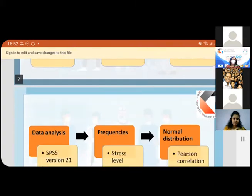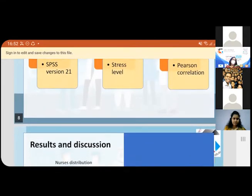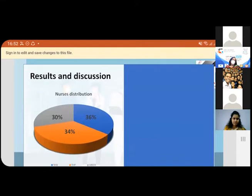I used Statistical Package for Social Sciences version 21 for data analysis. I found the frequencies for stress level. There was a normal distribution according to the Shapiro-Wilk test, and then I used Pearson correlation to find out the correlations.